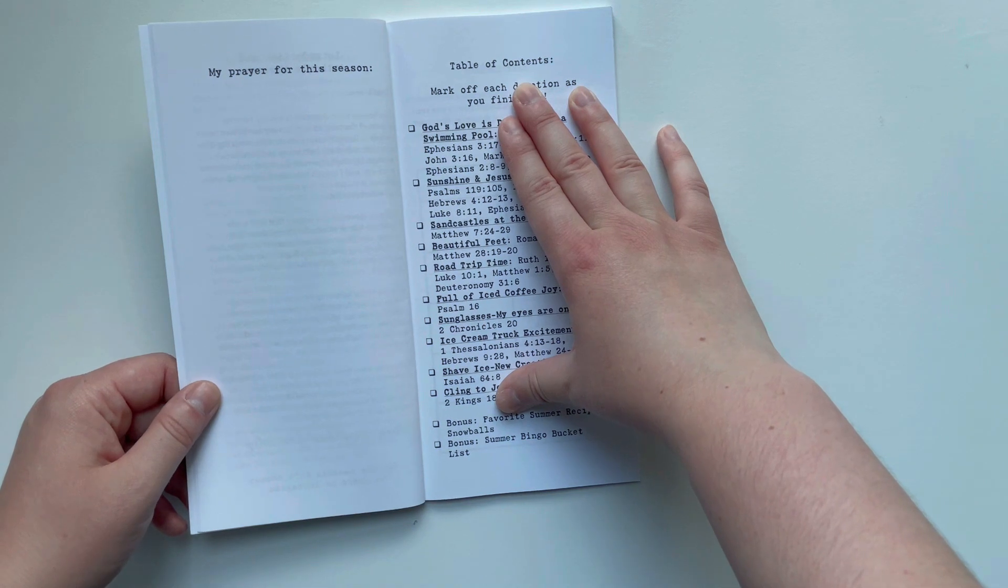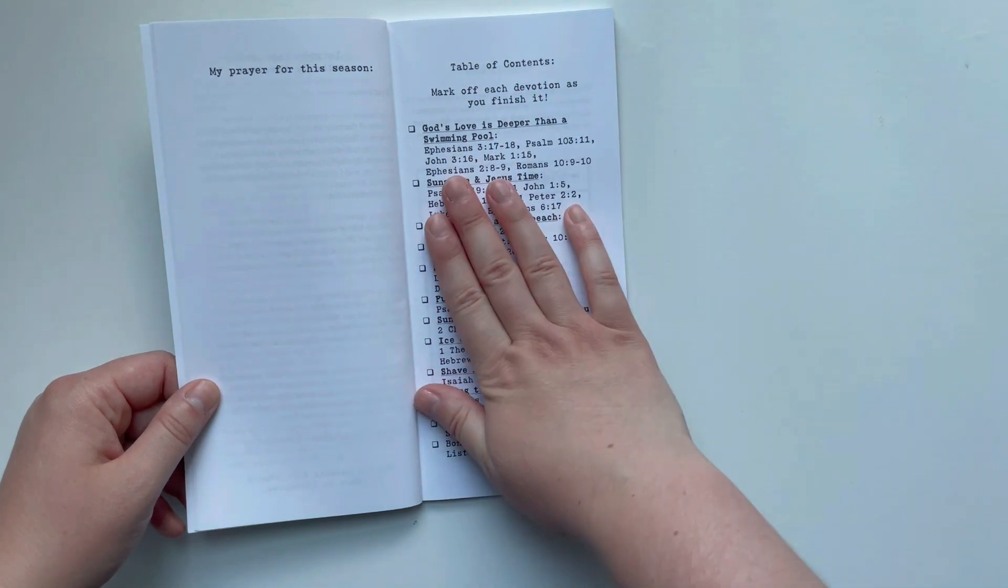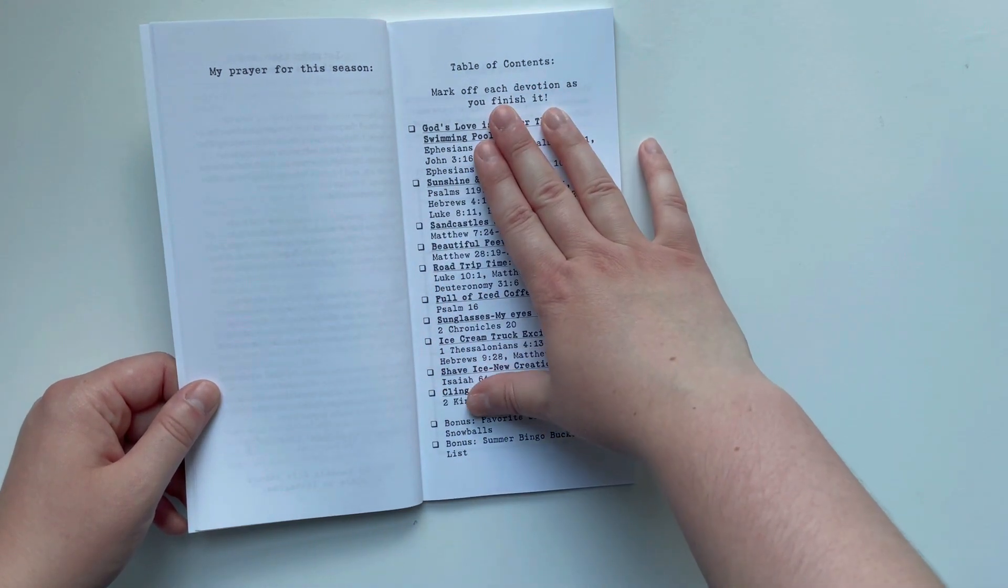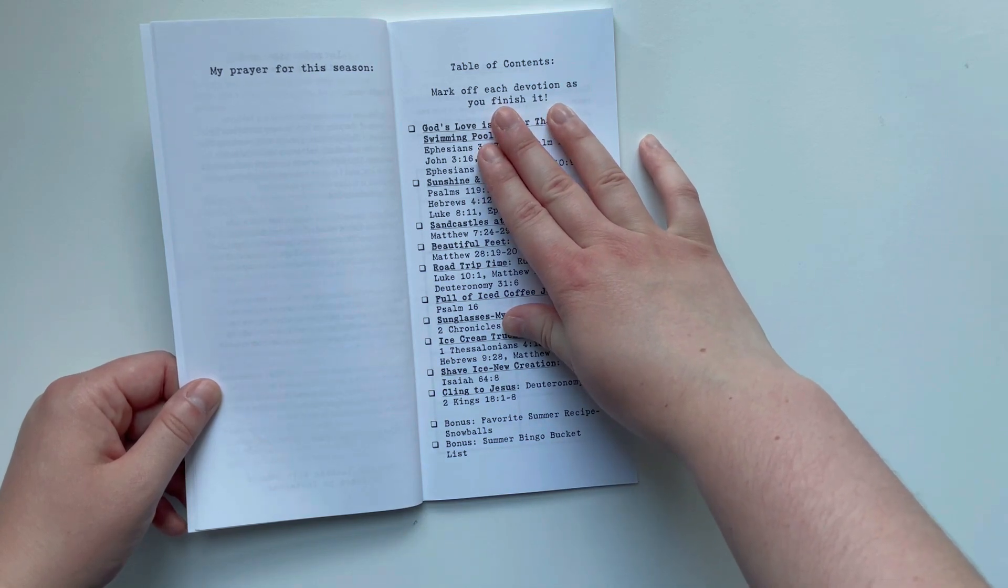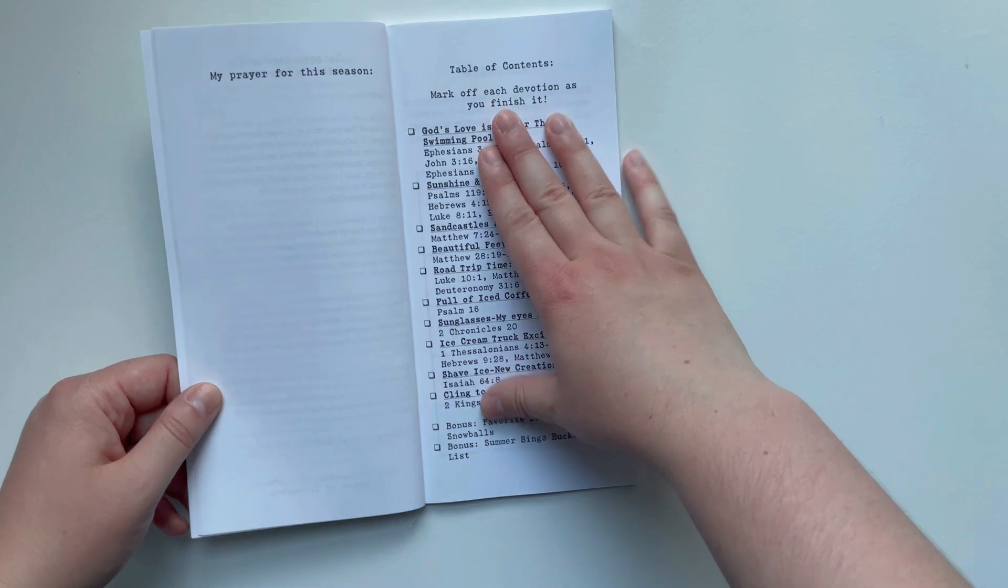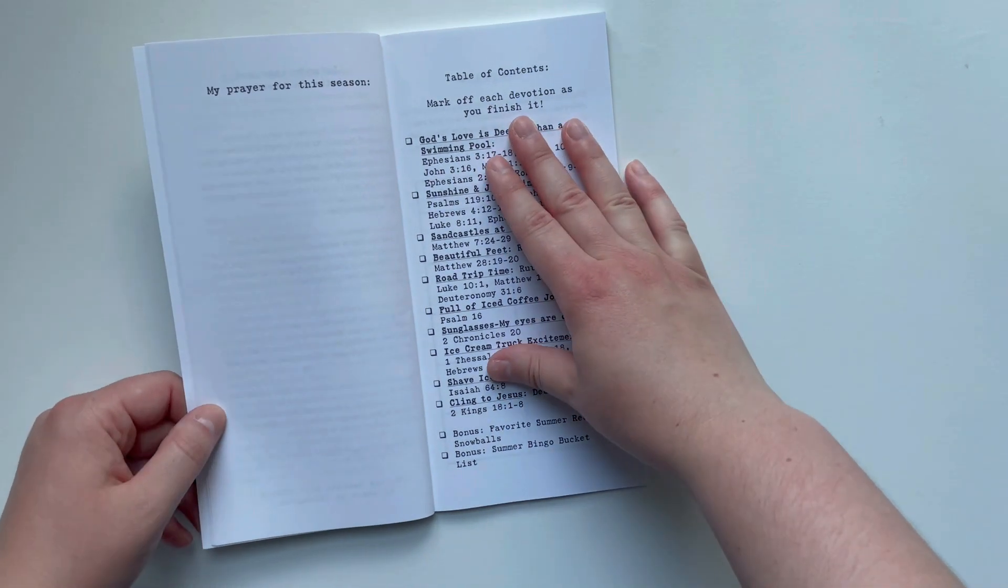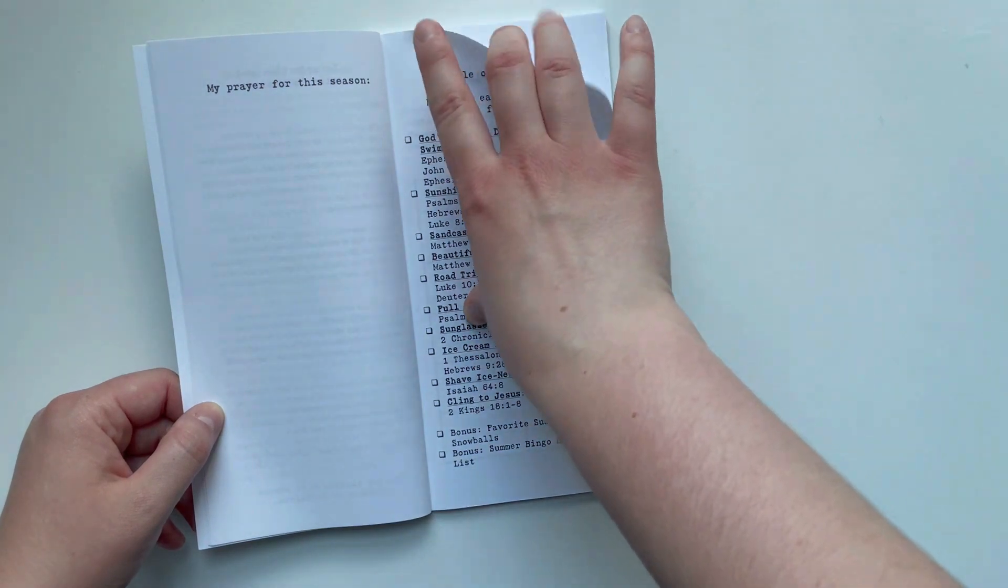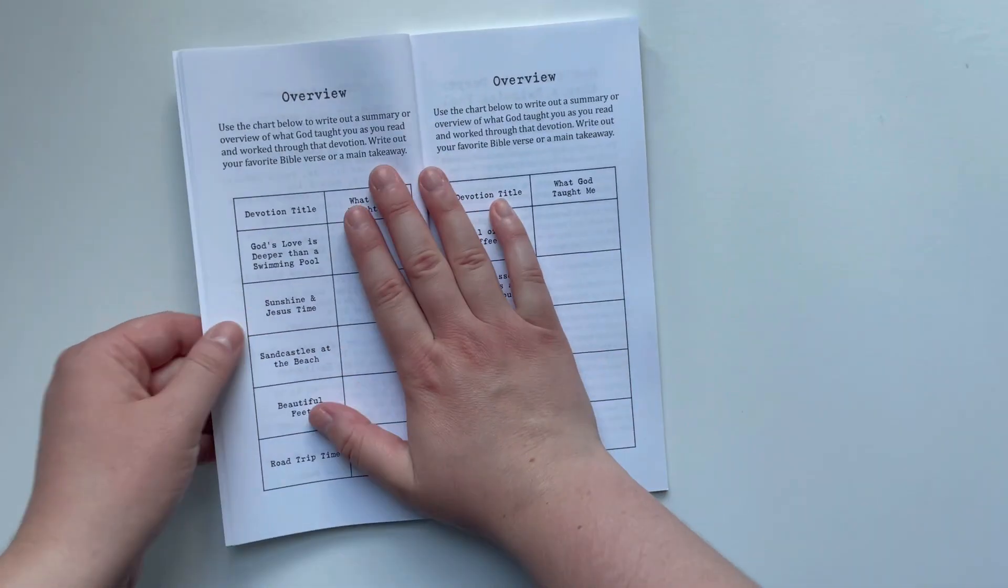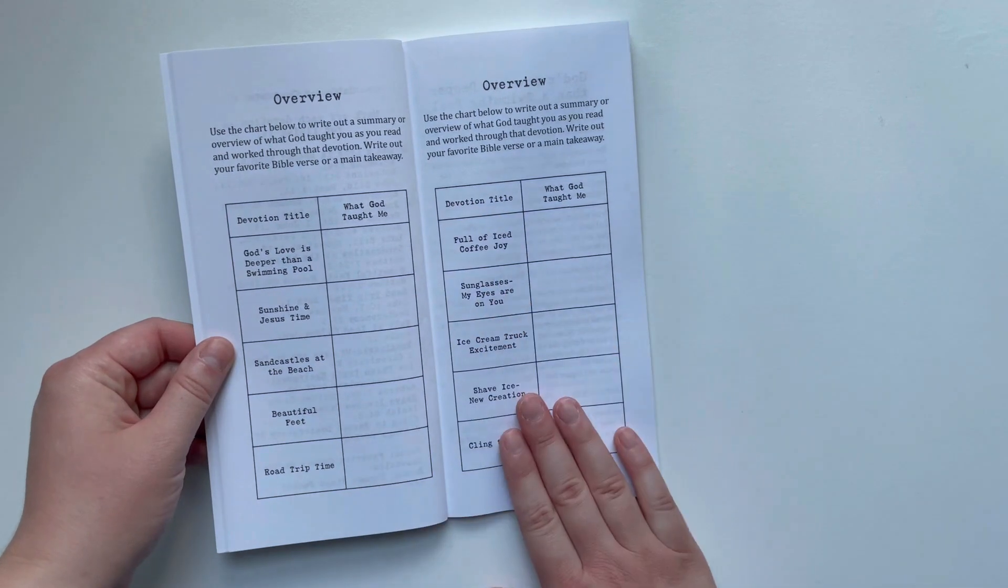It has the Bible verses that go along with them. And then down below there are two little bonuses in the back. One of them is one of our favorite summer recipes called snowballs, and then there's also a summer bingo bucket list, so lots of fun things.